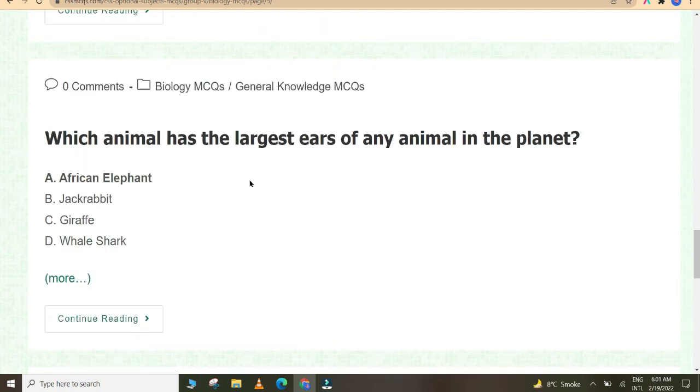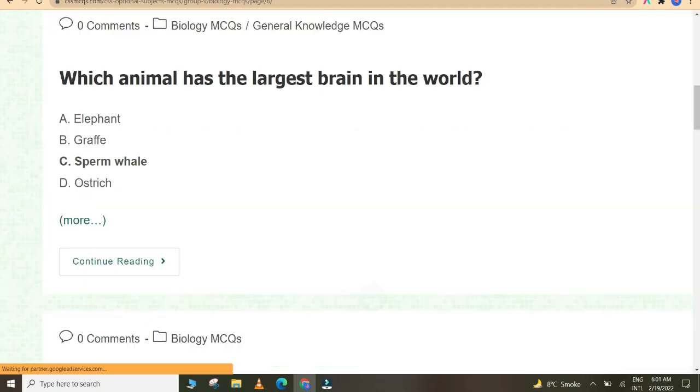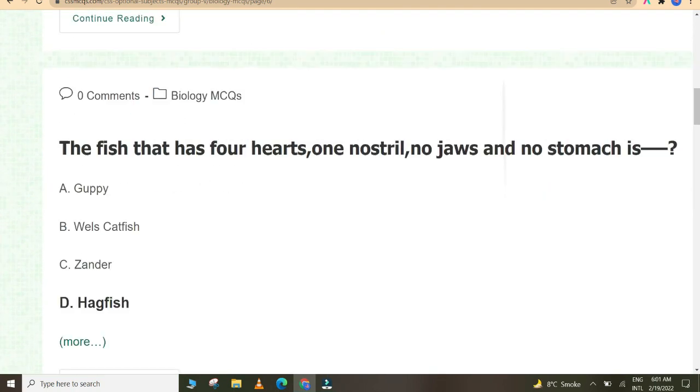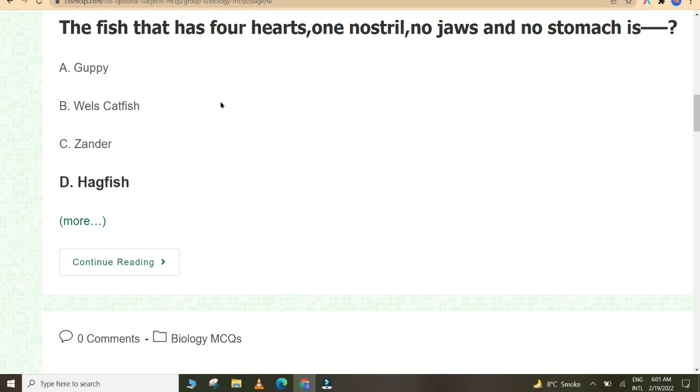What is the fastest land snake in the world? Black mamba. Which animal has the largest ears of any animal on the planet? African elephant. Which animal has the largest brain in the world? Sperm whale. The fish that has four hearts, one nostril, no jaws, and no stomach is hagfish.